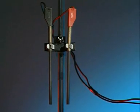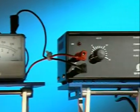A circuit is set up using two carbon electrodes, an ammeter and a power supply.